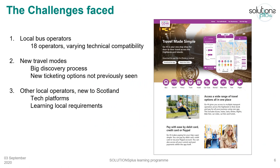Even after rolling out the GoHi project, challenges were still faced at different phases. Local bus operators all have different ways of managing their data, and the GoHi platform currently has 18 operators, each with different platforms. For them to be compatible with one system, you have to fully understand and integrate all their functionalities into one holistic system. This means you need skill, experience, and an experienced team that can understand the needs of each provider and bring them together into one system.